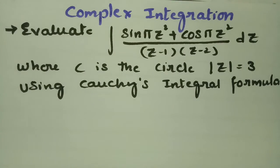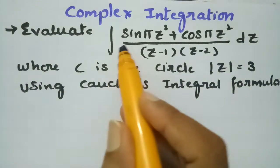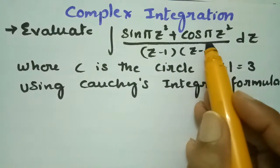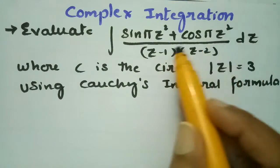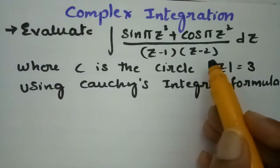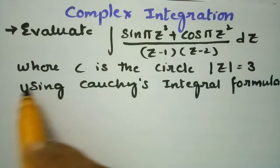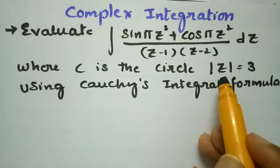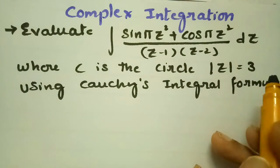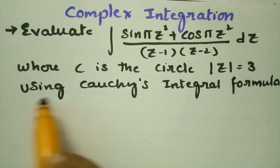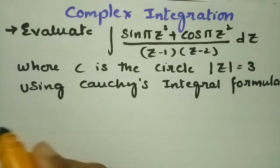This problem is from complex integration. In this video I am going to evaluate the integral of sin(πz²) plus cos(πz²) divided by (z−1)(z−2) dz, where C is the circle |z| = 3, using Cauchy's integral formula.